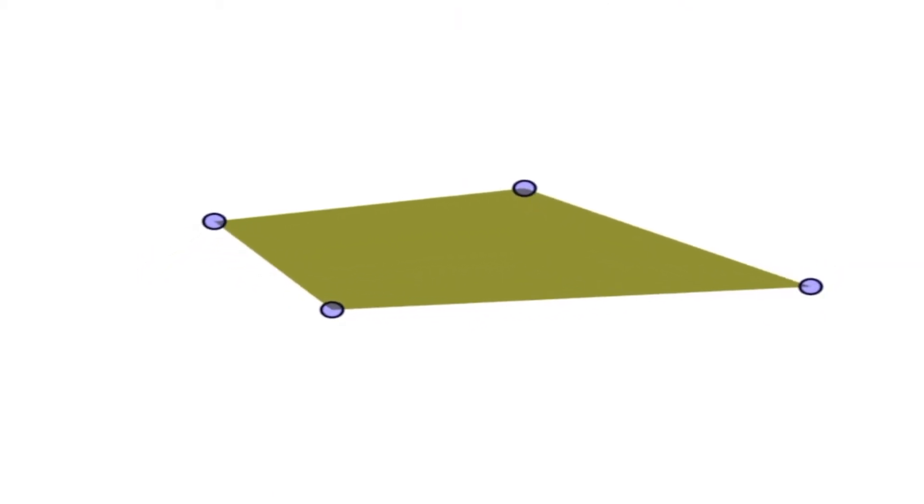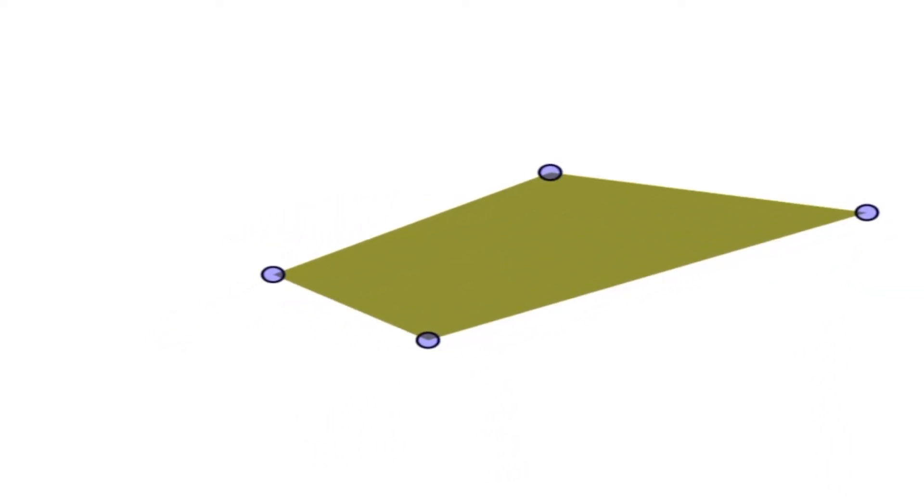Here's an example of four points which are coplanar. These four points can be expressed on a single plane as illustrated in the following diagram. So these are four points that are coplanar.